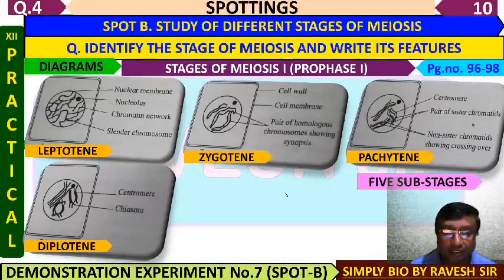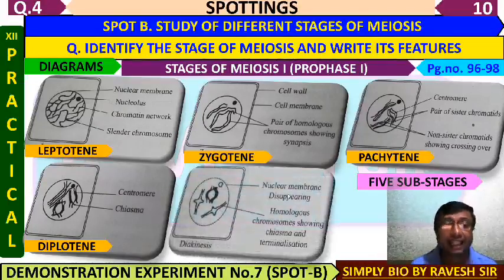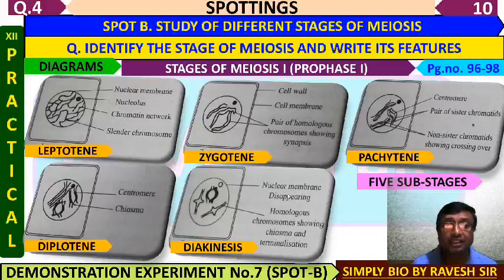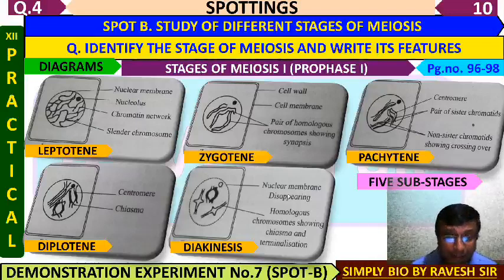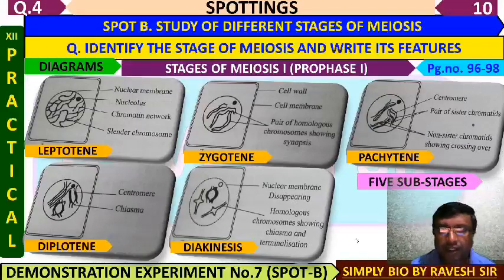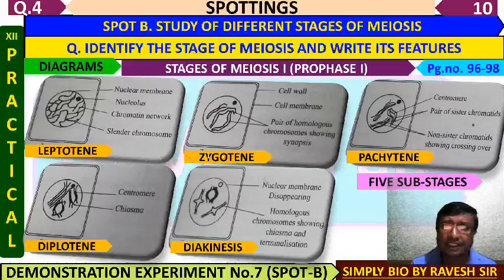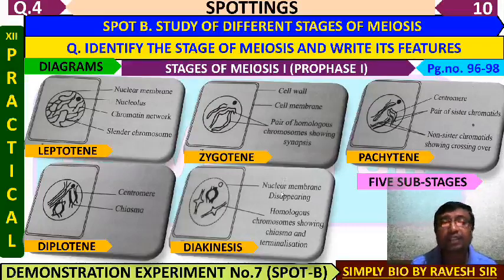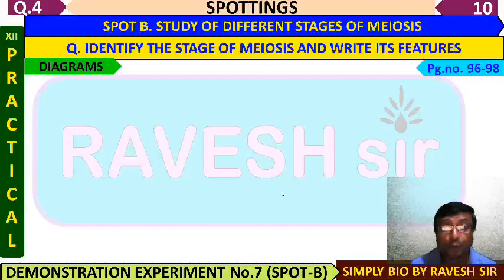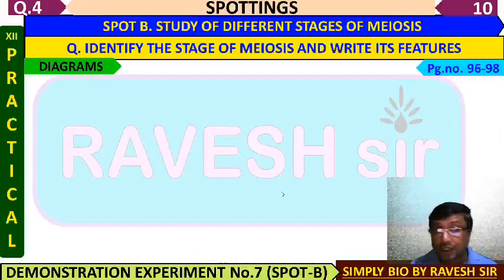The next sub-stage is diakinesis. In diakinesis, the four chromatids are now ready to get separated — this is called terminalization. These are the Prophase 1-related sub-stages, and you should be able to write the specific points for each distinctly and very easily.